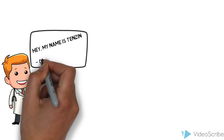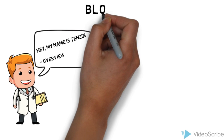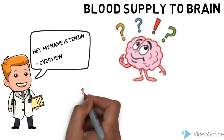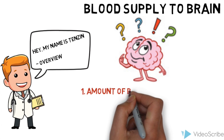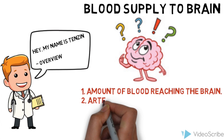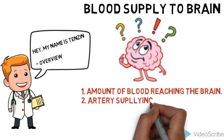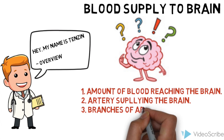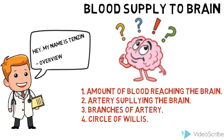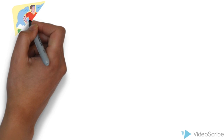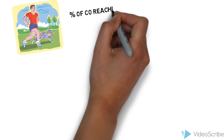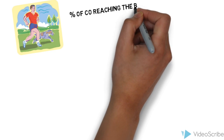Hi, my name is Tenzin. This is a quick overview of blood supply to the brain. We are going to learn about the amount of blood reaching the brain, the arteries which supply the brain, branches of those arteries, and the Circle of Willis. In a normal healthy individual, the percentage of cardiac output reaching the brain is 15%.